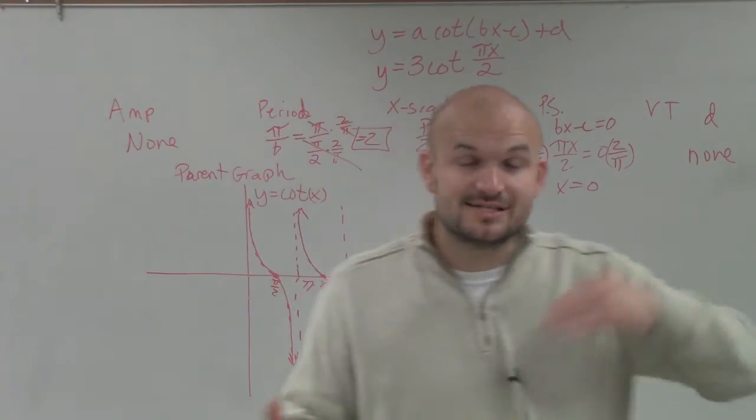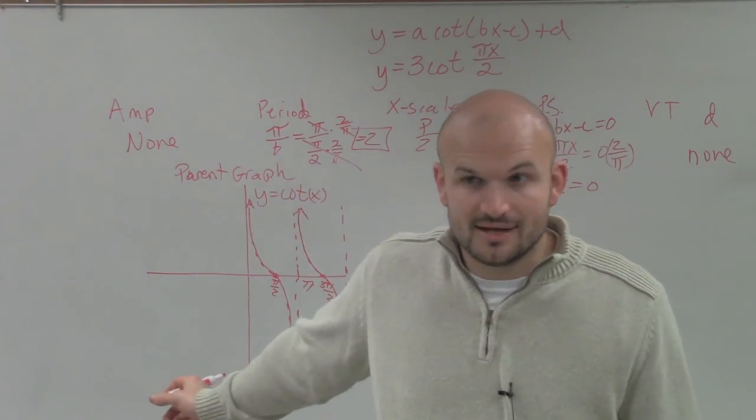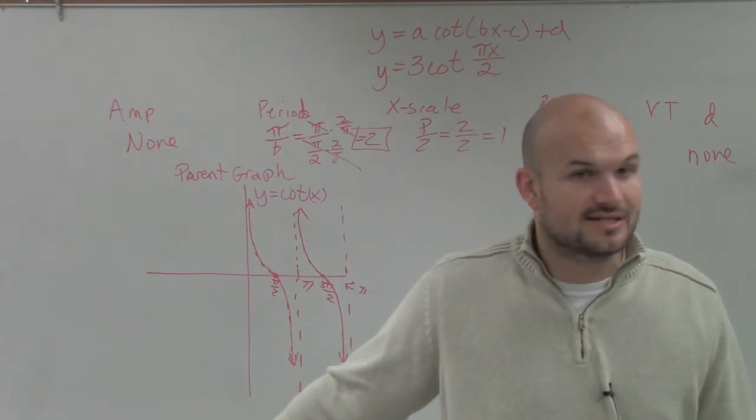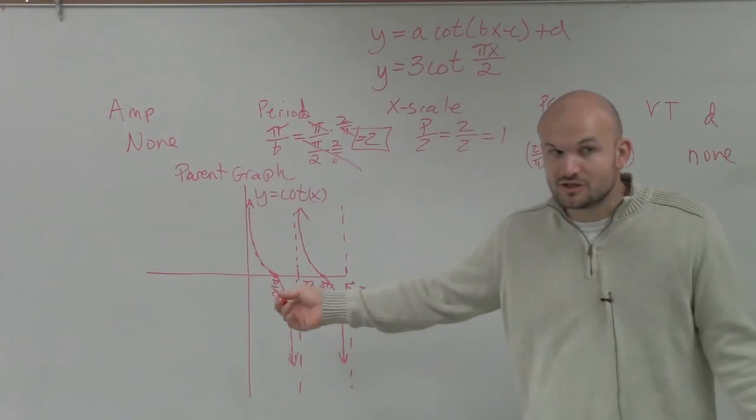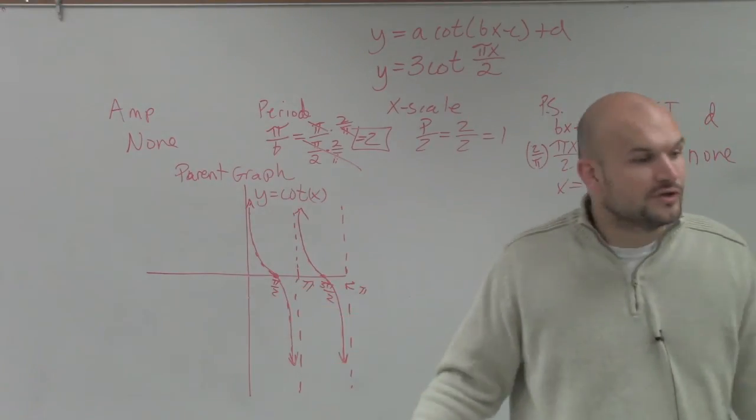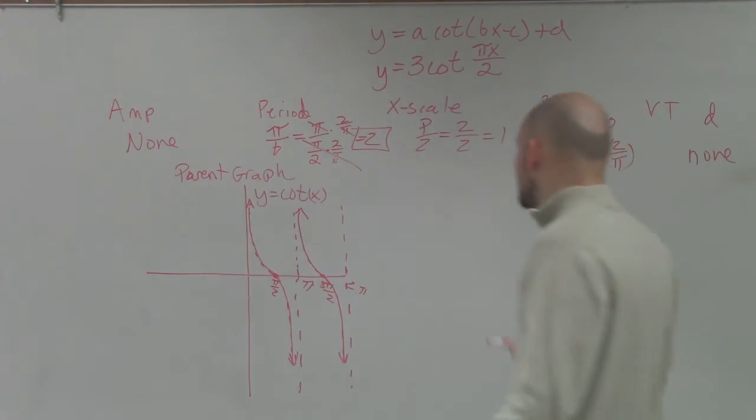So everybody should know that unless there's a reflection going on, your graph should look like that, right? We know the scale is going to be different and all that kind of stuff. But unless there's something crazy going on, everybody's graph should look something like this, right? And if you don't remember, obviously, you can use your graphing calculator to graph it and just check it out.